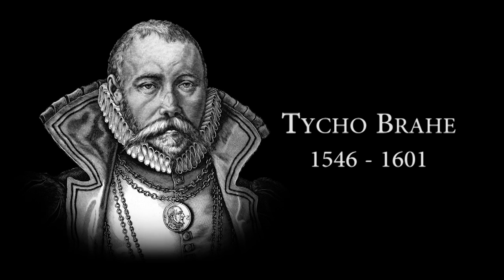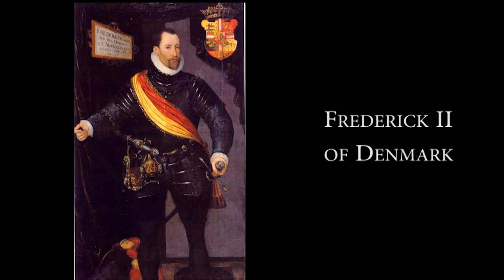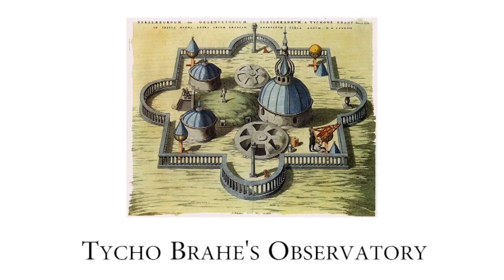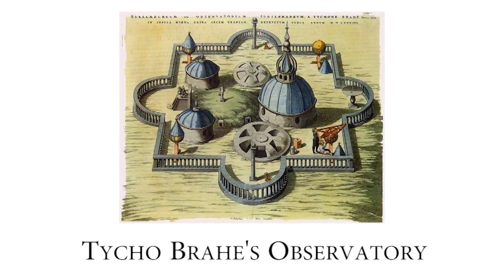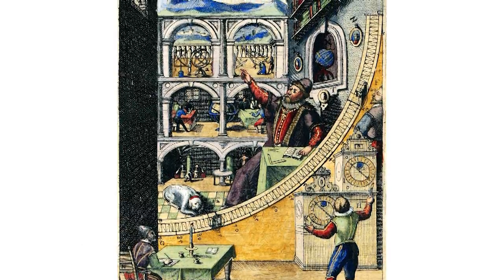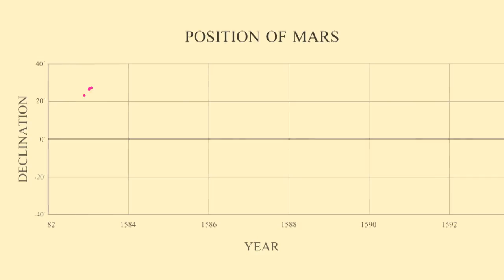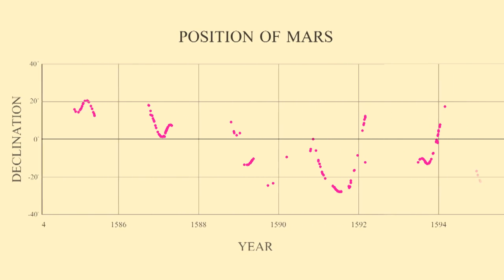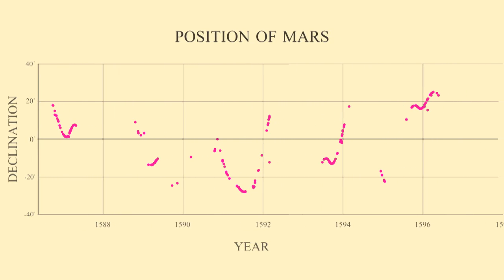Tycho was rich. His stepfather had rescued King Frederick II from drowning and as a result, died of pneumonia. The very grateful King supported Tycho's huge research program. When Kepler finally got his hands on the Mars data, he predicted that he would solve the problem in eight days. Eight years later, he was still working on it.